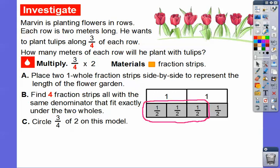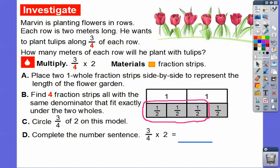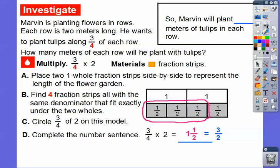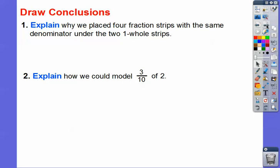We're looking for three-fourths of two. One-half plus one-half plus one-half gives us three of those one-halves. So completing the number sentence: three-fourths times two equals one and one-half, which also equals three-halves. Depending on what your teacher is looking for, Marvin's going to plant one-and-a-half meters of tulips.